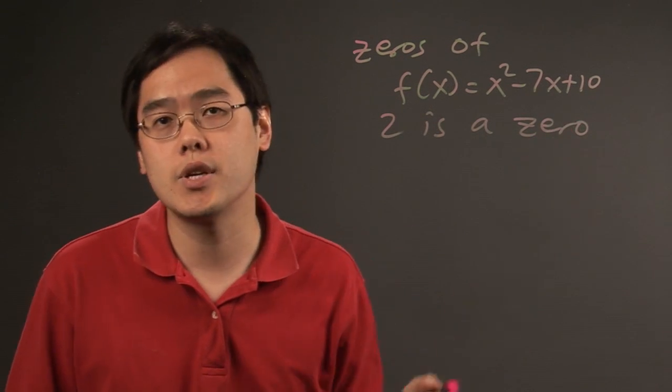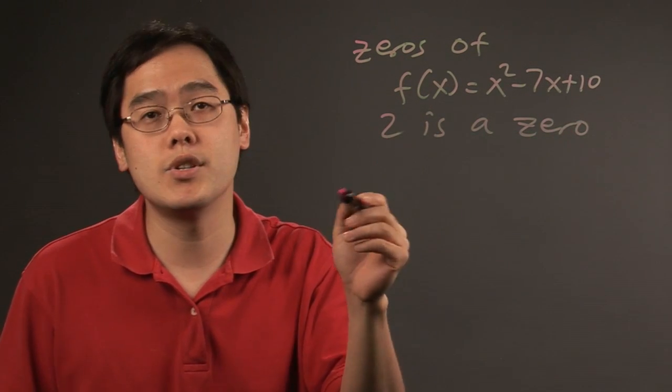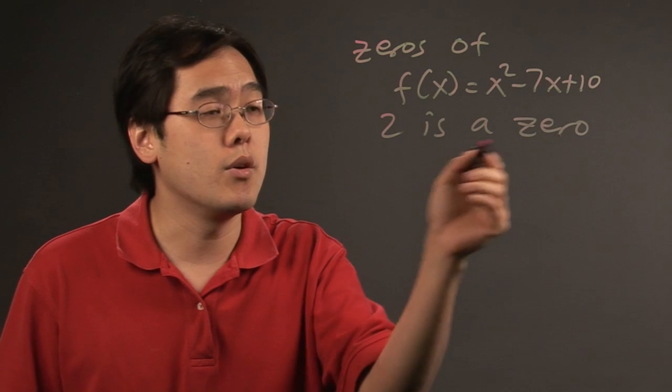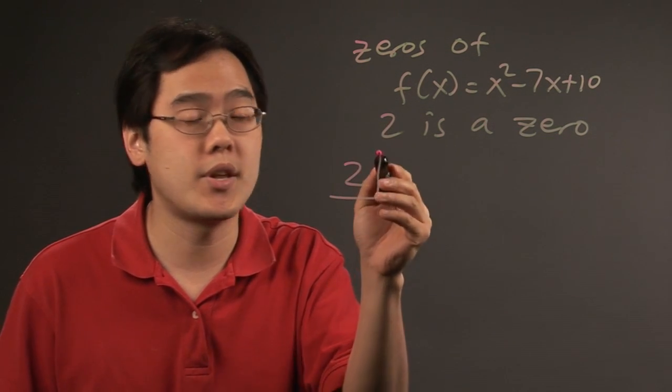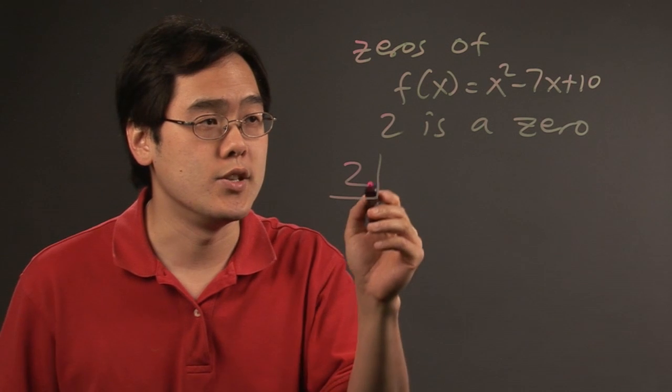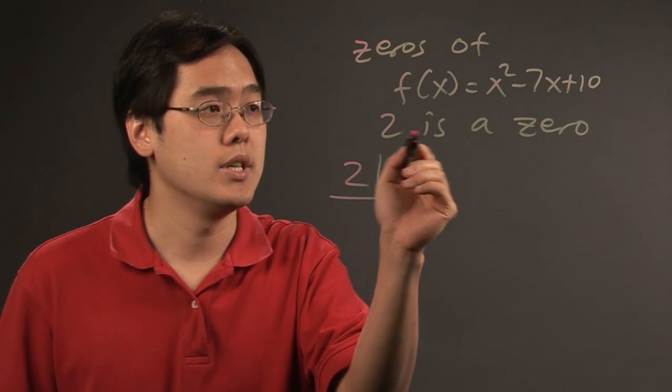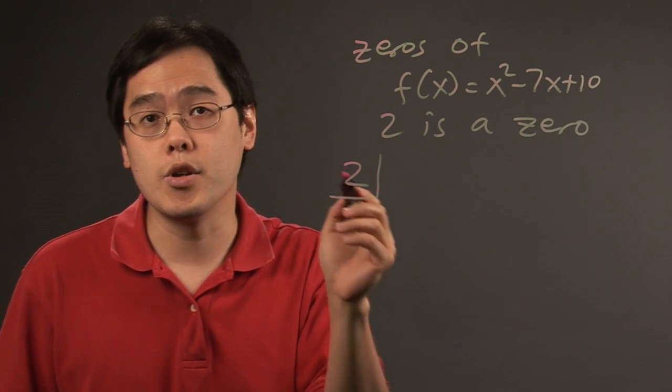Generally, when they give you a zero, it's a nice starting point to consider, because if they give you a number as a zero of the function, that number you put in a box. That's how the synthetic division process works—whatever number they give you for a zero, you put in the box.